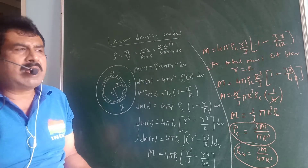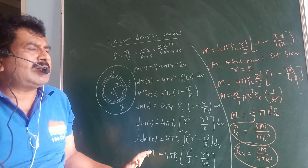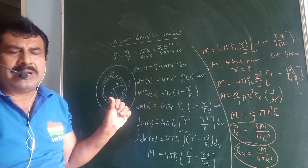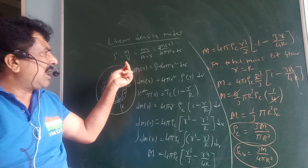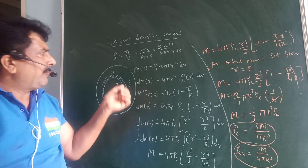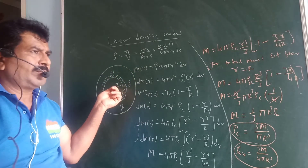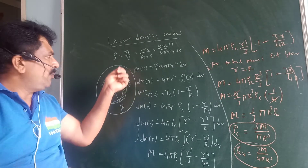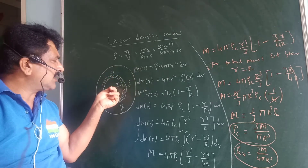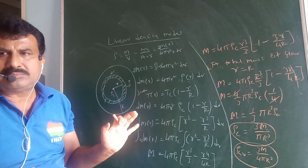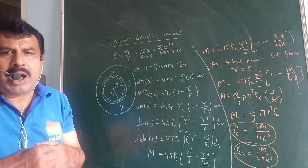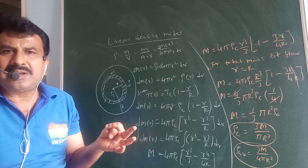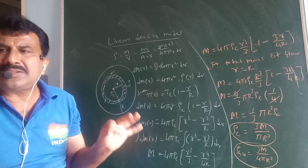The density of the star does not remain constant throughout the entire star. The outer surface of the star has lower density. By increasing the depth into the star, the density goes on increasing. Not only density, but as depth increases, luminosity increases, temperature increases, and the density of the gases also goes on increasing.